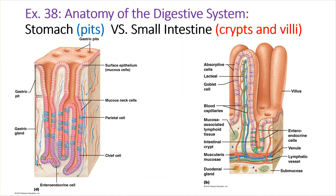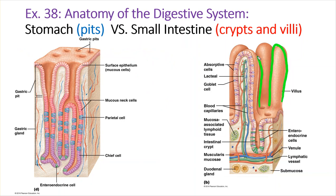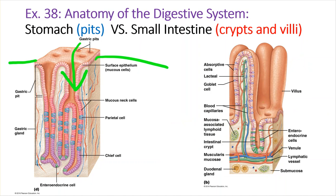One main difference between the stomach and the intestines is the presence of villi. In your stomach there are no sticky-uppy things at all — it's flat with invaginations that go down. In our intestines, we have villi — finger-like projections that stick up covered with epithelium. We also have crypts that go down in the intestines. In the stomach, it's flat with gastric pits that go down, and at the very bottom of the pits are the gastric glands.